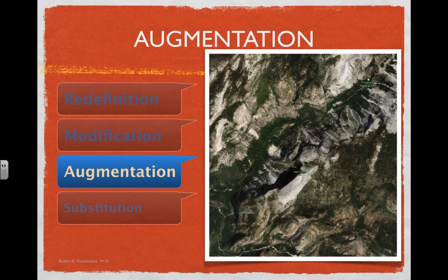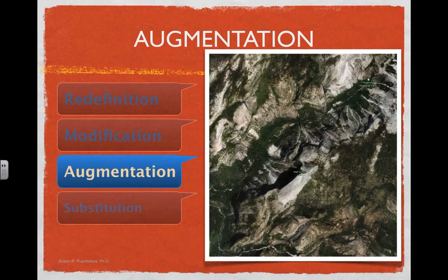Here is an example of a map. Think about a paper map or globe — it wasn't always incredibly specific with small, unique places, and you never really got a sense of the surrounding geography. Now with something like Google Maps, we can zoom in and get a very specific view of a place, even down to street-level views. It changes our understanding of where a place is because of the functionality of the tools, even though we are still looking at a map and trying to understand the geography of an area.